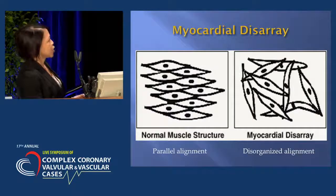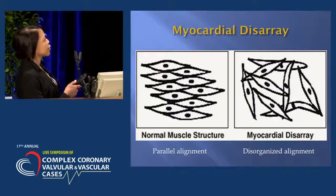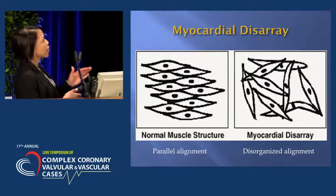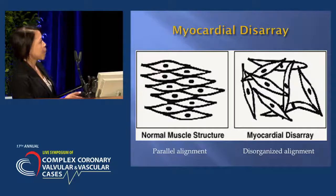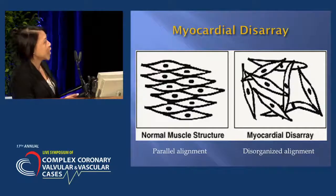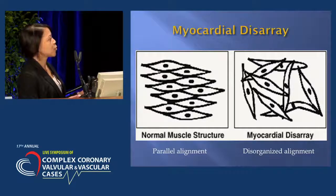In this picture, it's showing normal muscle structure — you can see the fibers are normal, nice, orderly, and organized. And over here, with the myocardial disarray, you can see that the fibers are all over the place. There is no organization.